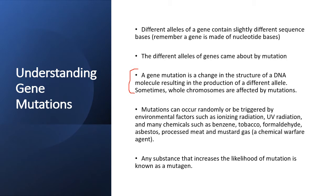Mutations can occur very randomly. Usually when we have DNA replication, there are sometimes a lot of errors in that process. Some of those errors are non-consequential — they don't result in any significant change. If you've looked at the triplet code table, you might remember that some amino acids are coded for by more than one triplet code. For example, triplet code UAA and UAC might both code for alanine. So during DNA replication, if this A is replaced by a C, you would still get the exact same amino acid.